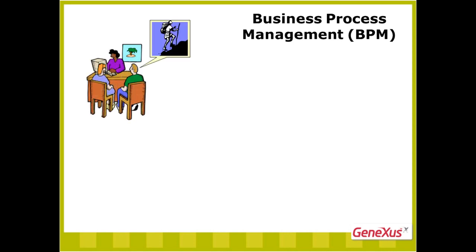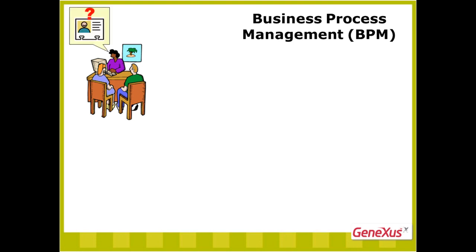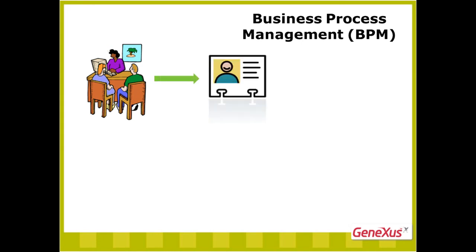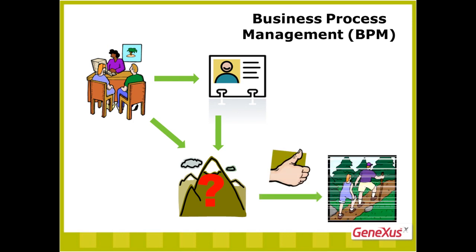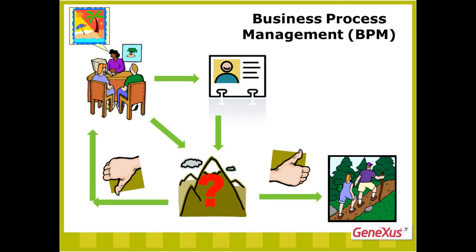Some procedures at the travel agency call for several tasks to be carried out one right after another in a given order. One example is a reservation for a holiday package at a specific attraction. When entering the reservation, we must verify that the individual booking the package is a customer of the agency. If not, we must enter them as a customer. Having done this, we must verify the existence of packages available for the number of individuals who want to make the trip. If there are enough seats available, the reservation is assigned; otherwise, the passenger is offered a different package. A sequence of steps like this is what we call a business process.